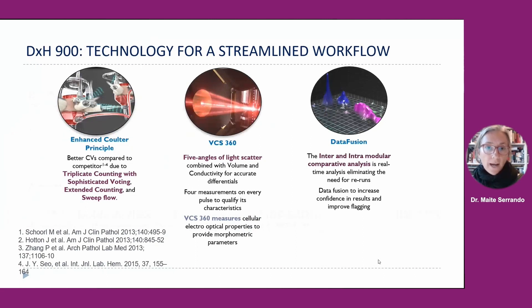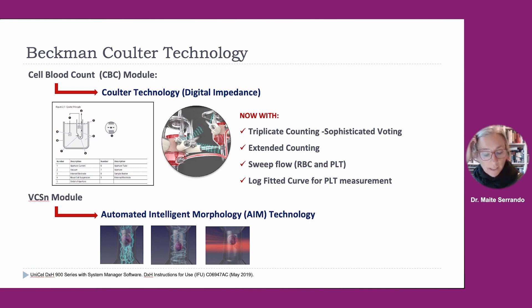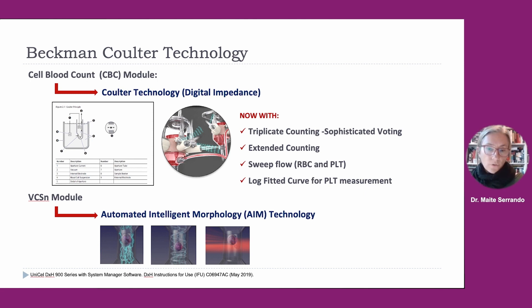Let's talk about Beckman Coulter hematology technology, which is based on two modules. The first module is the CBC module, based on the Coulter principle, that accurately counts and sizes cells by detecting and measuring changes in electrical resistance. The DXH 900 has digital impedance with triple-aperture counting and sophisticated voting, extended counting, and sweep flow in order to prevent recirculation of cells, especially red blood cells and platelets behind the aperture. The second module is the BCS module, or automated intelligent morphology technology, that provides excellent results for leukocyte differential.